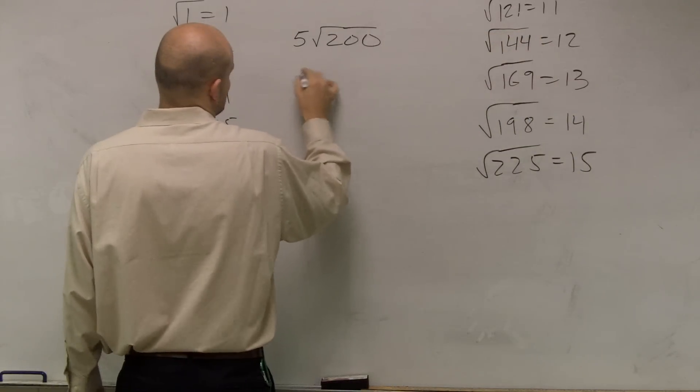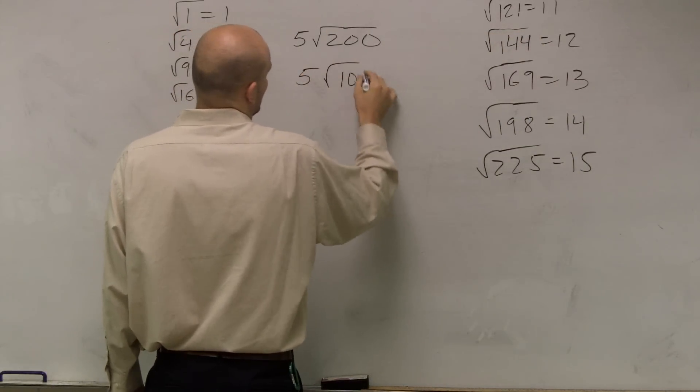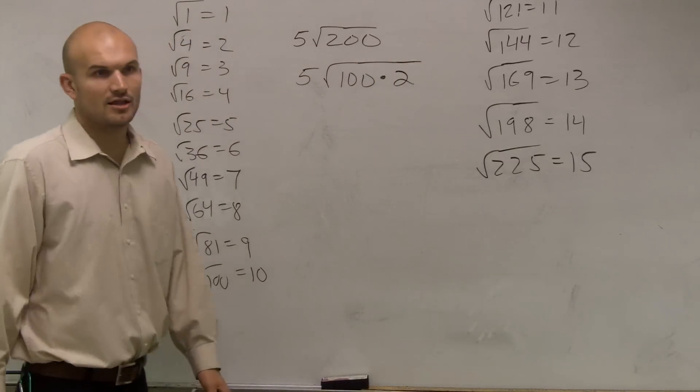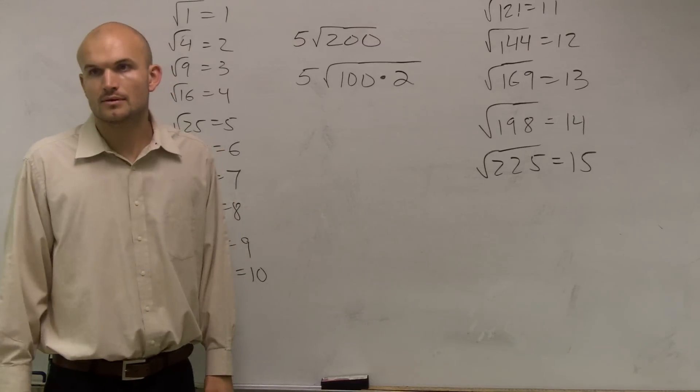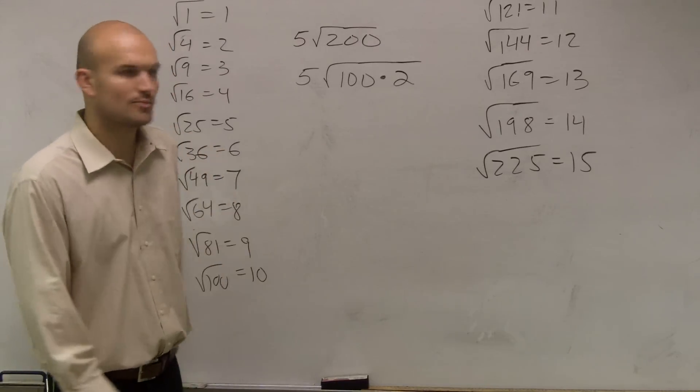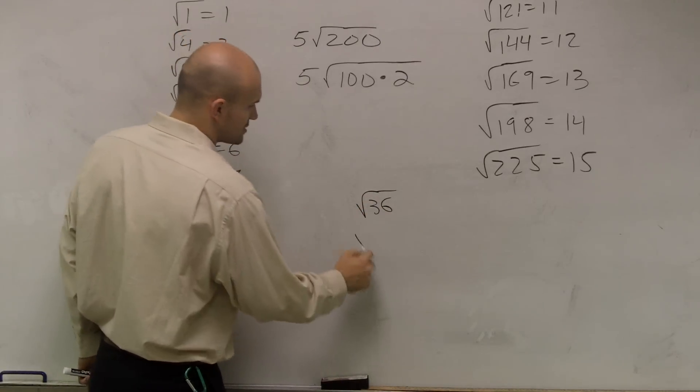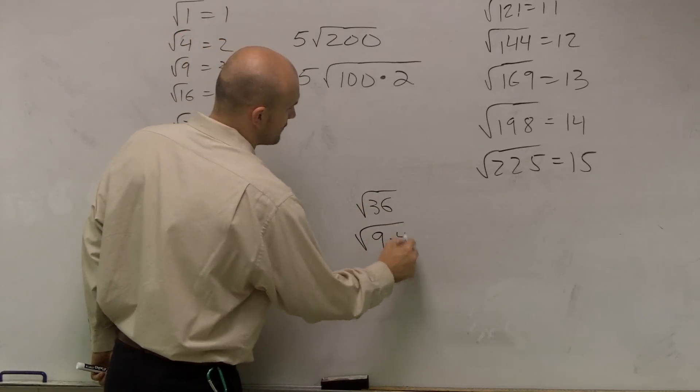So I can rewrite this as 5 times the square root of 100 times 2. Does anybody follow me? Right? And let me go and prove one more thing to you. The square root of 36 equals the square root of 9 times 4, right?